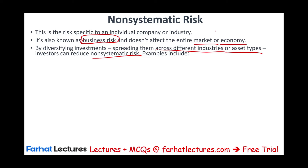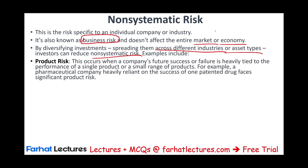What specifically is non-systematic risk? One type is product risk — this occurs when a company's future success is heavily tied to the performance of a single product or small range of products. For example, small pharmaceutical companies heavily rely on the success of one patented drug. If that drug gets FDA approval, they do great; if not, they don't. In contrast, a large company like Johnson & Johnson has many different product lines — medical equipment, drugs, personal consumers — so they are heavily diversified within the company and don't face significant product risk.